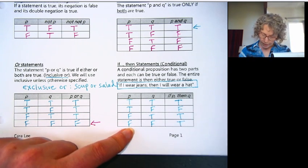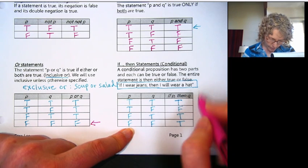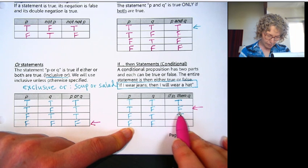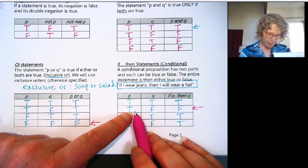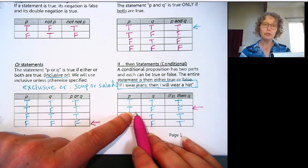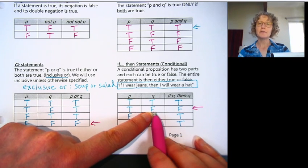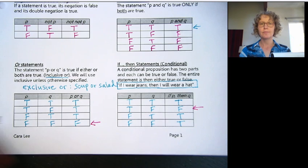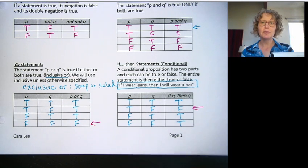So on this one, one is different, just like the others. The only way to get a false statement in an if-then is if the hypothesis, the if part, is true but the conclusion is false. That's the only way this one can be false. Thank you for watching this introduction on propositions and truth tables, and I'll see you in the next video.